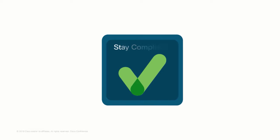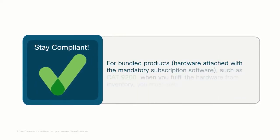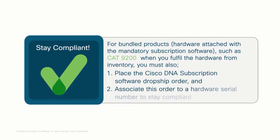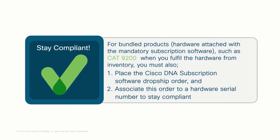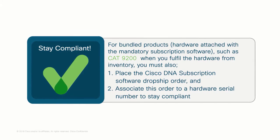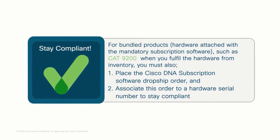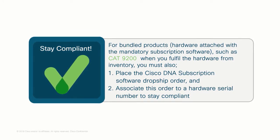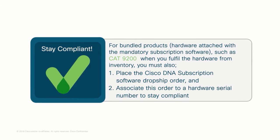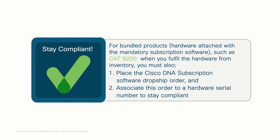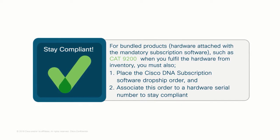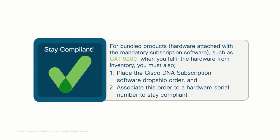It is also important for you to stay compliant. Today, many product portfolios are available in bundles, i.e., hardware is bundled with subscription software. One such example is Cat9200, where a Cisco DNA subscription software is required on all Cat9200 orders to be in compliance with Cisco software policy. Hence, when you fulfill the Cat9200 switch from inventory, you must also place a dropship order for mandatory Cisco DNA subscription software for this hardware, and associate the subscription order to a hardware serial number to stay compliant. For all compliance failures, Cisco requires to follow up with you.